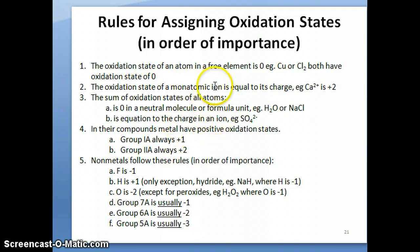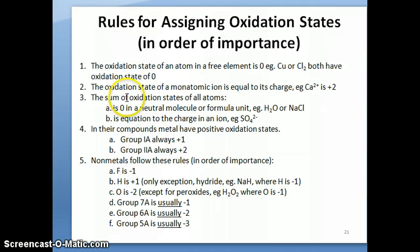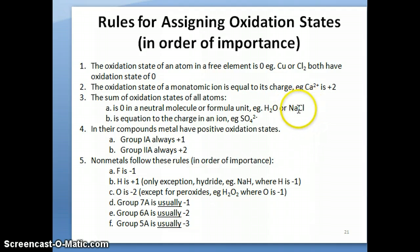If you have a monoatomic ion, the oxidation number equals the charge of the ion. So if you have calcium 2+, its oxidation number is plus two. One thing to remember: the sum of all oxidation numbers in a compound must equal zero if it's neutral. For water, the sum for hydrogen and oxygen must equal zero. For sodium chloride, the sum for sodium and chloride must also equal zero.